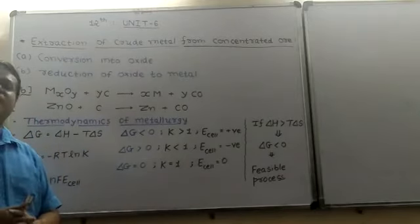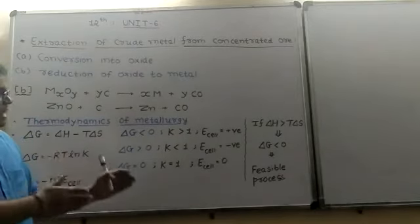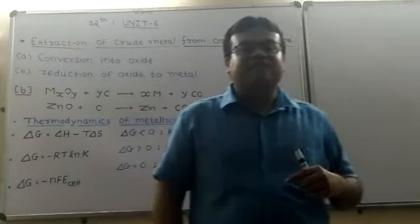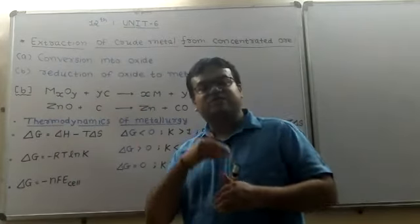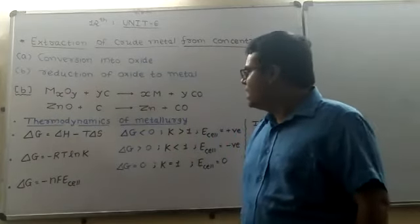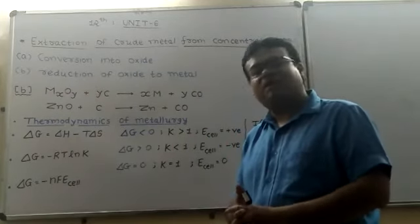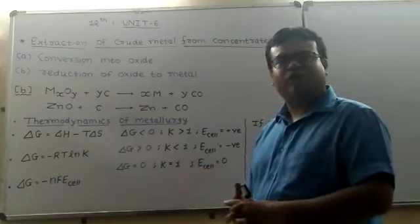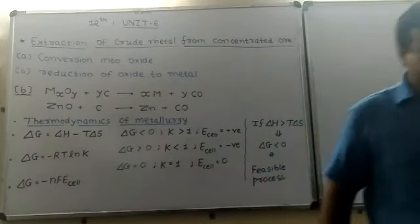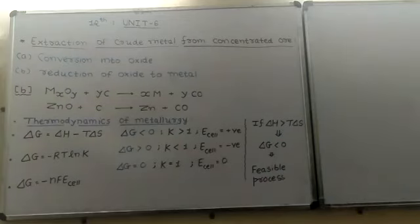When we compare the role of reducing agents, the maximum negative value of ΔG indicates the strongest reducing agent capacity. This is the thermodynamic aspect related to metallurgy, and then we can go with other points related to this thermodynamic aspect.